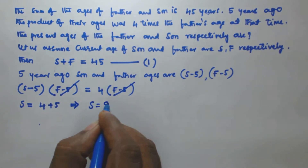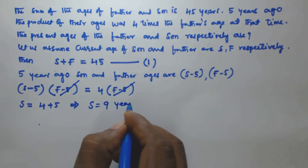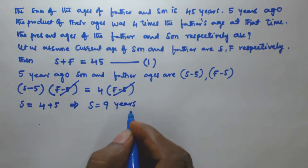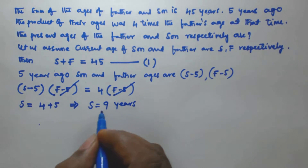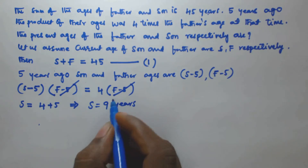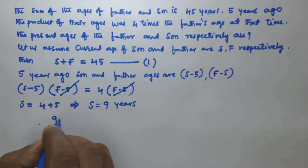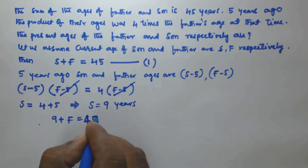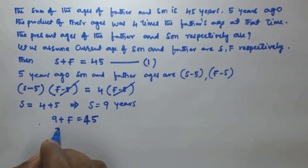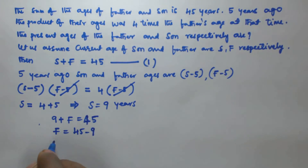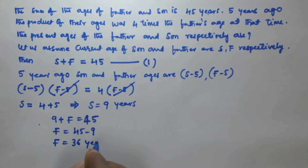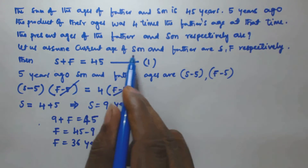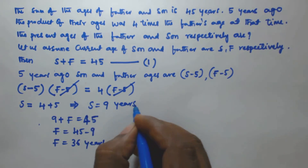So s is equal to nine years — the age of the son is nine years. Now substituting s equals nine into equation one: nine plus f equals 45, so f equals 45 minus nine, which gives f equal to 36 years.